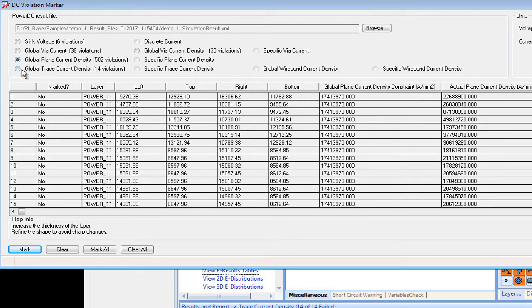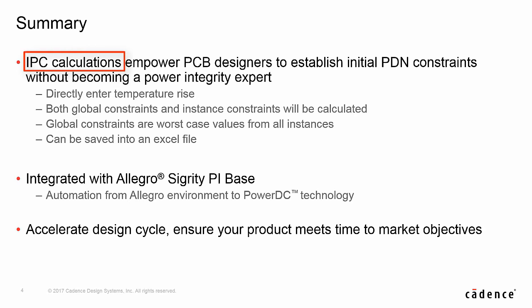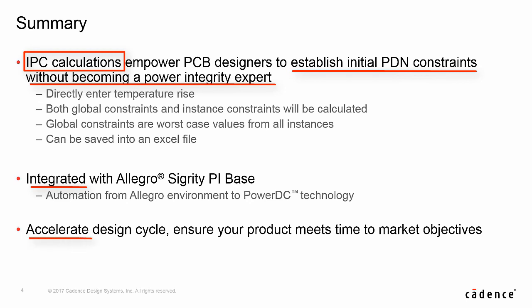However, there are of course other violations that can be displayed. Standards are great because they make it easy for anyone to follow rules without having to worry about the theory behind them. Designers just need to input the allowed temperature rise and global constraints are calculated using IPC standards. Those constraints are for worst-case scenarios, so you can override the global constraints for any specific instance where it's okay to be less restrictive. And you can save these constraints as an Excel file to make it easy to reuse the exact same constraints again. All of these functions are integrated with Allegro PI Base, so the PCB designer can do a lot of this on their own — that really speeds up the design cycle by saving one or more iterations that used to go back and forth between the board designer and the power engineer.